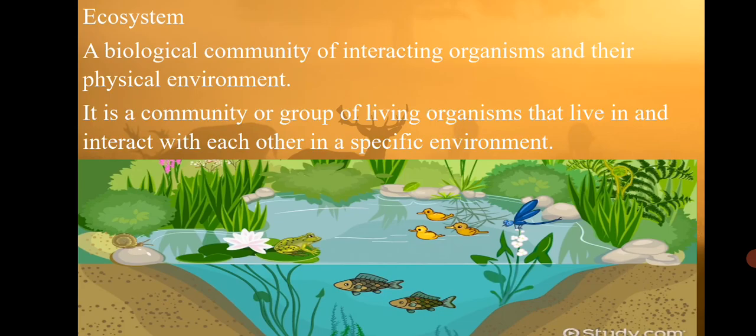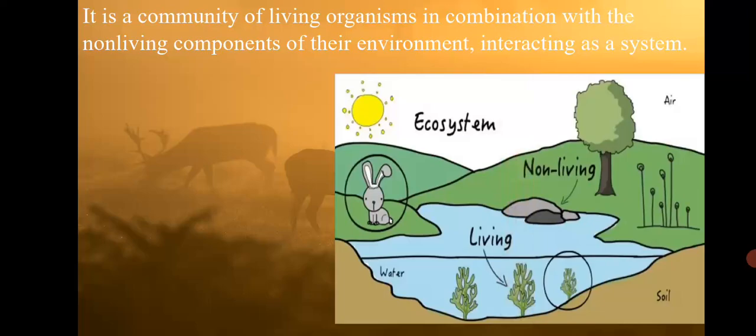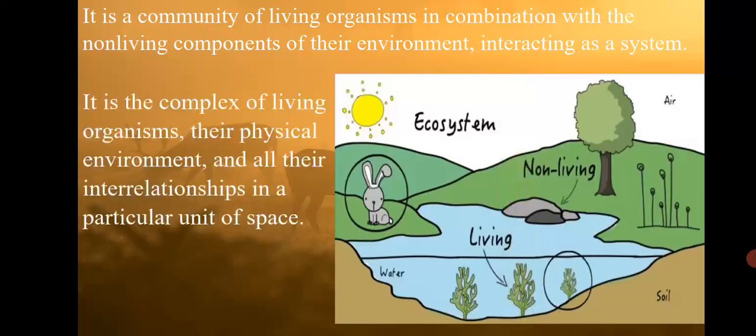It's a community or group of living organisms that live in and interact with each other, and also with the specific environment. It's a community of living organisms in combination with the non-living components of the environment. Ecosystem is a complex of living organisms and their physical environment, and all their inter-relationships in a particular unit of space.